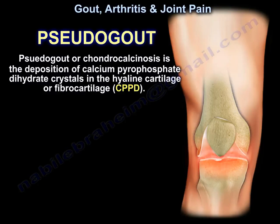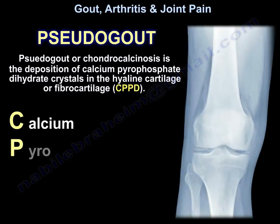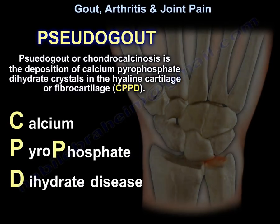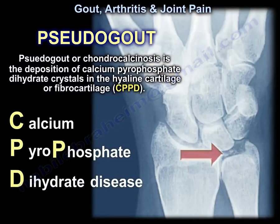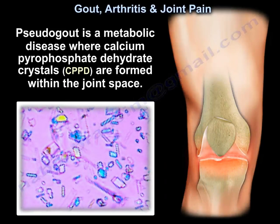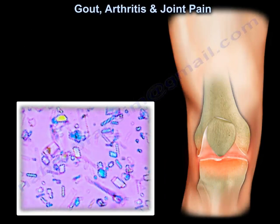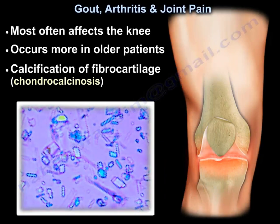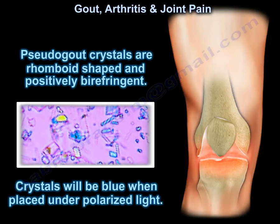Pseudogout, or chondrocalcinosis, is the deposition of calcium pyrophosphate dehydrate (CPPD) crystals in the hyaline cartilage or fibrocartilage. It is a metabolic disease where CPPD crystals are formed within the joint space, most often affecting the knee and occurring more in older patients, causing calcification of fibrocartilage. Pseudogout crystals are rhomboid-shaped and positively birefringent — they appear blue when placed under polarized light.